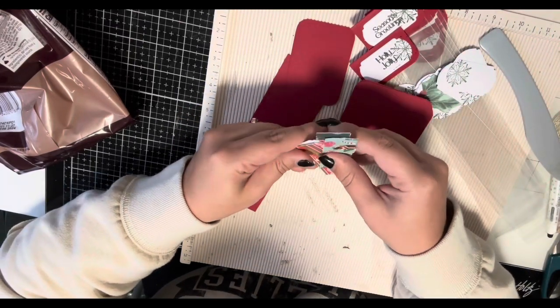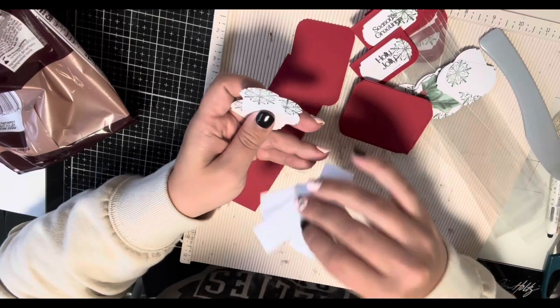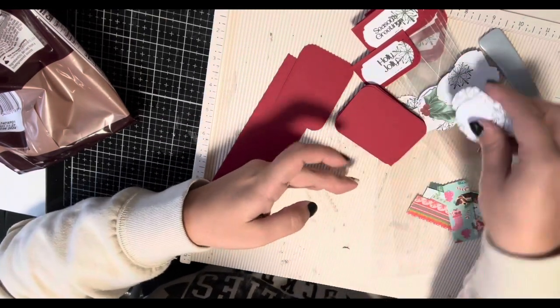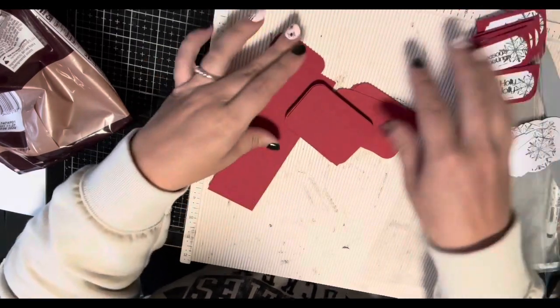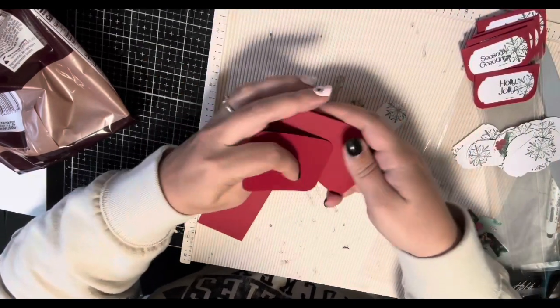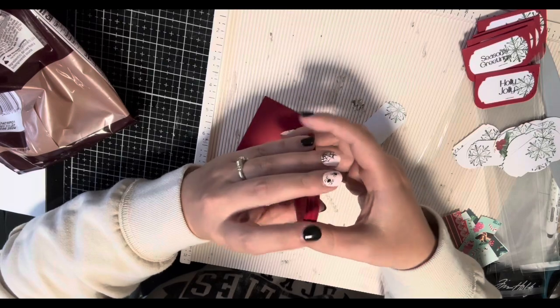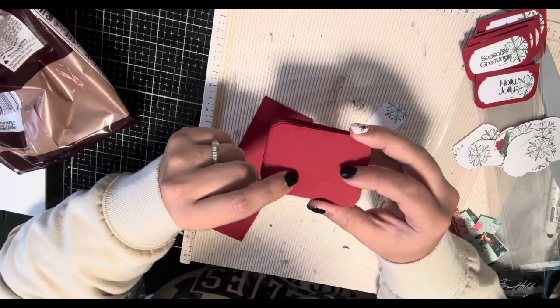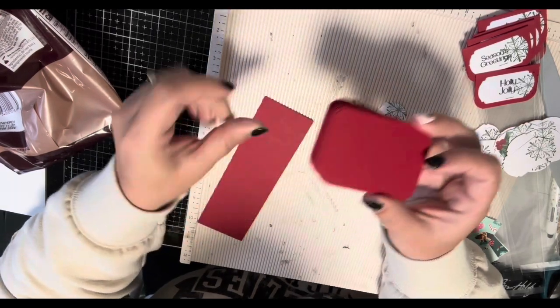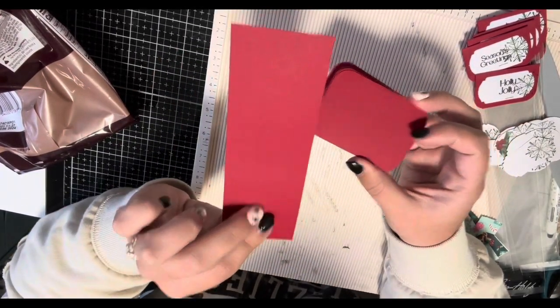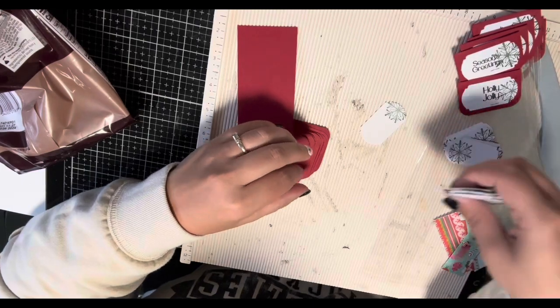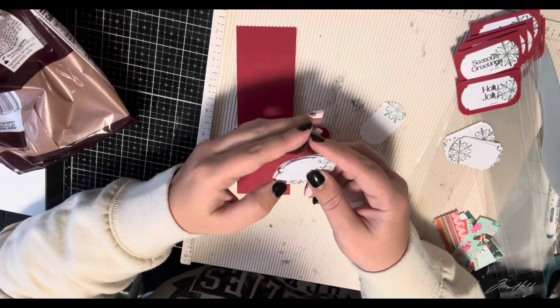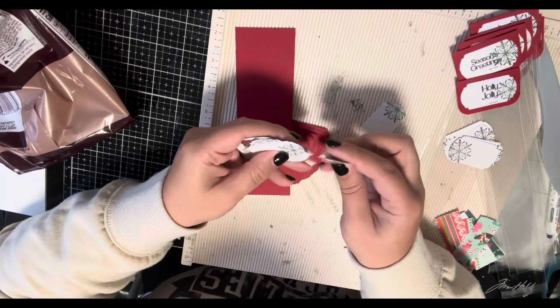Once you have your color scheme picked out, what I did and what I will do from now on is I cut as many as I could of everything I knew I would need. I ended up cutting about a hundred of my toppers, a hundred of my boxes, probably 200 of my tags because it was a punch that I was borrowing while I was at this retreat.